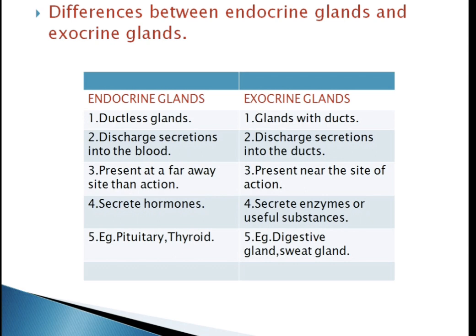Exocrine glands have ducts. They secrete their products into ducts. The ducts carry the secretion into body cavities, the lumen of various organs, or the body surface. Examples include digestive glands and sweat glands.